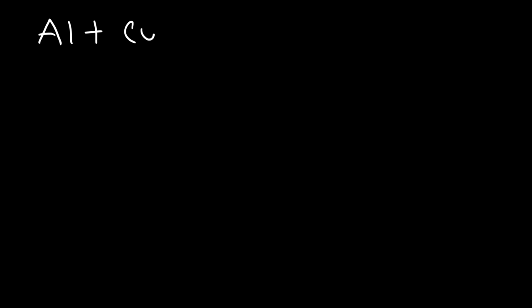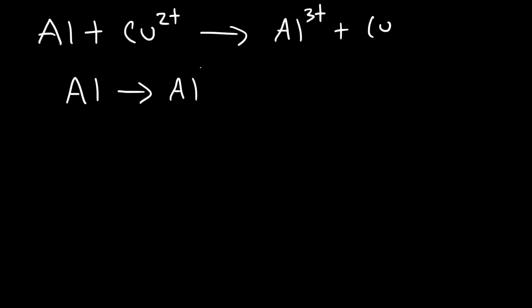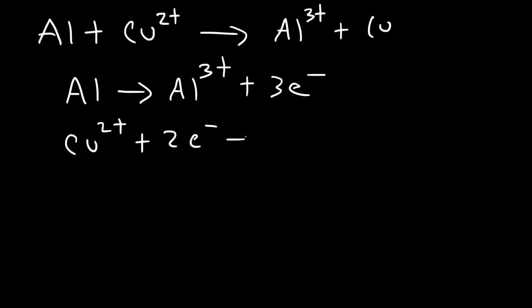Sometimes you may not be given a galvanic cell diagram — instead you might be given a net reaction. Consider this example: aluminum reacts with the Cu²⁺ ion to produce Al³⁺ plus copper metal. To write the cell notation, first write the half reactions: aluminum turns into Al³⁺ by releasing three electrons, and copper picks up two electrons turning into copper metal.